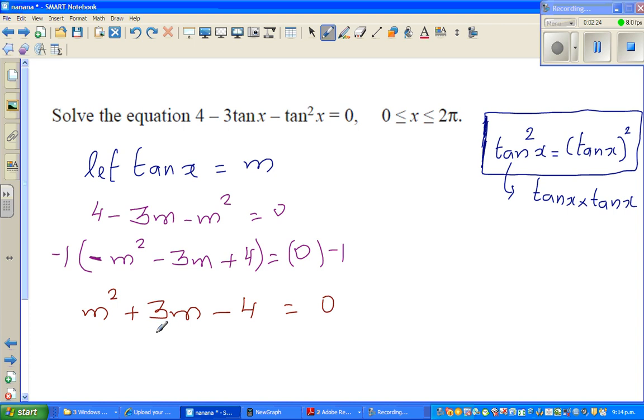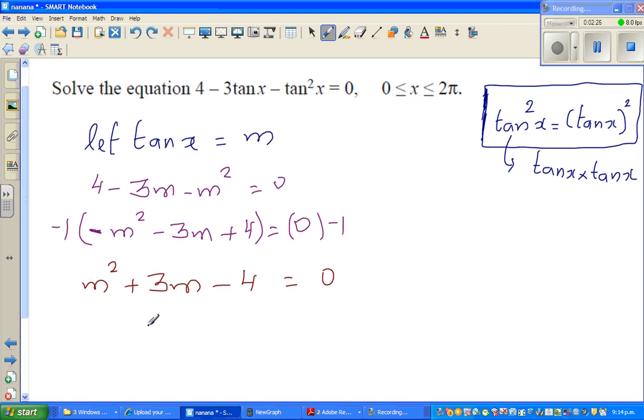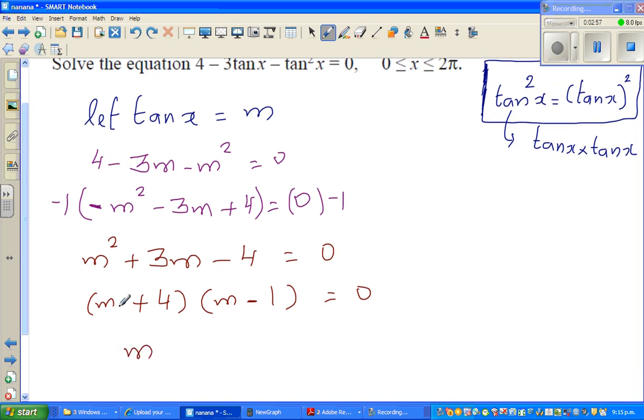Now this is a neat quadratic equation. Students can understand how to factorize this. You have to put this in brackets. You've got m² here, so put an m here and an m here. Two numbers which multiply to give you negative 4 and add to give 3. You have to have a plus and a minus. The greater number has to come here because you want a plus here. So it's plus 4 minus 1. If you set this equal to 0, you can understand that m = -4 or m = 1.